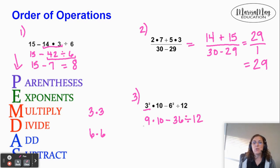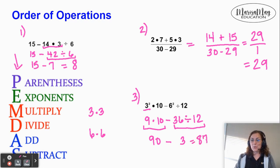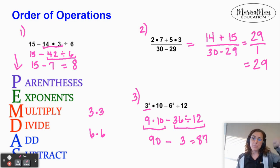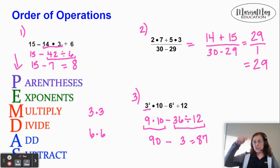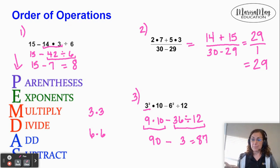Our next step is to multiply or divide in order from left to right. I come to the multiply part: 9 times 10 is 90. Then I come to the divide part: 36 divided by 12 is 3. And then we can finish up with the subtraction. I want you to really practice with this order of operations, making sure you follow it every time. You may want to write down your PEMDAS acronym and check off the steps as you do them, to make sure you're checking each one before you go forward in the problem.